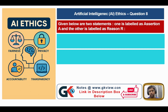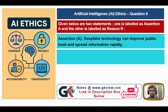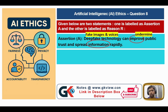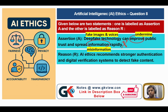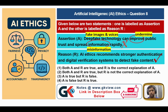Question number eight: Assertion A — deepfake technology can improve public trust and spread information rapidly — this is false. Deepfake means creation of fake images and voices; 'improve' should be 'undermine,' and it spreads misinformation, not information. Reason R — AI ethics recommends stronger authentication and digital verification systems to detect fake content — the reason is true. So the answer is C or fourth option: A is false but R is true.